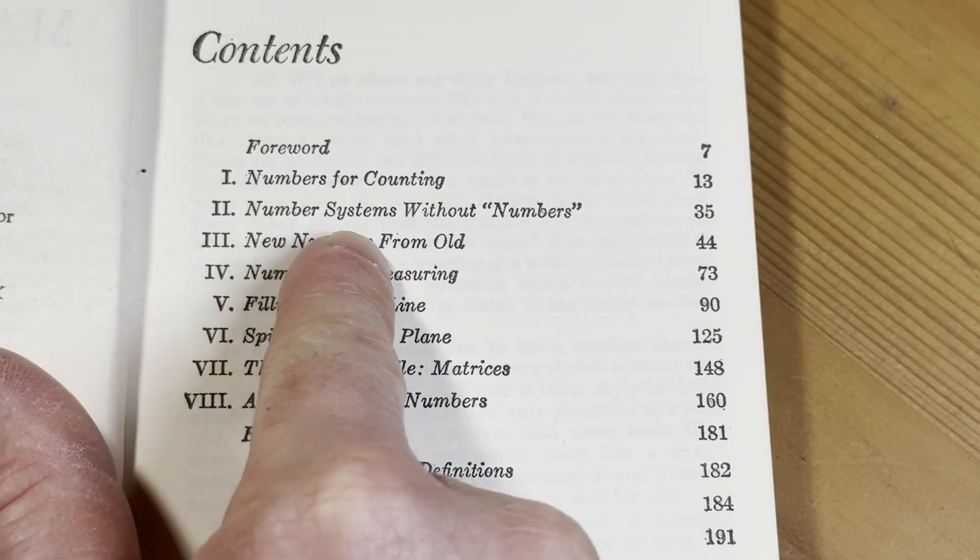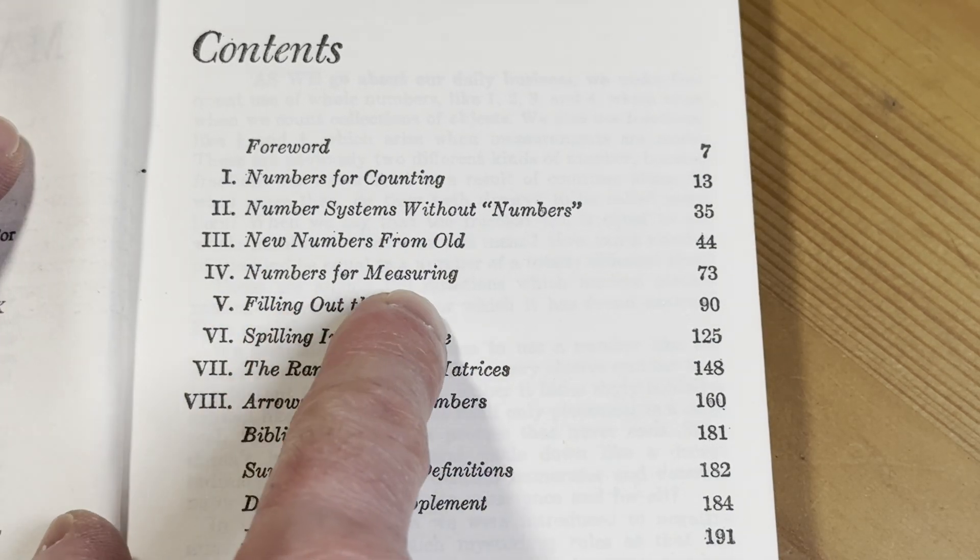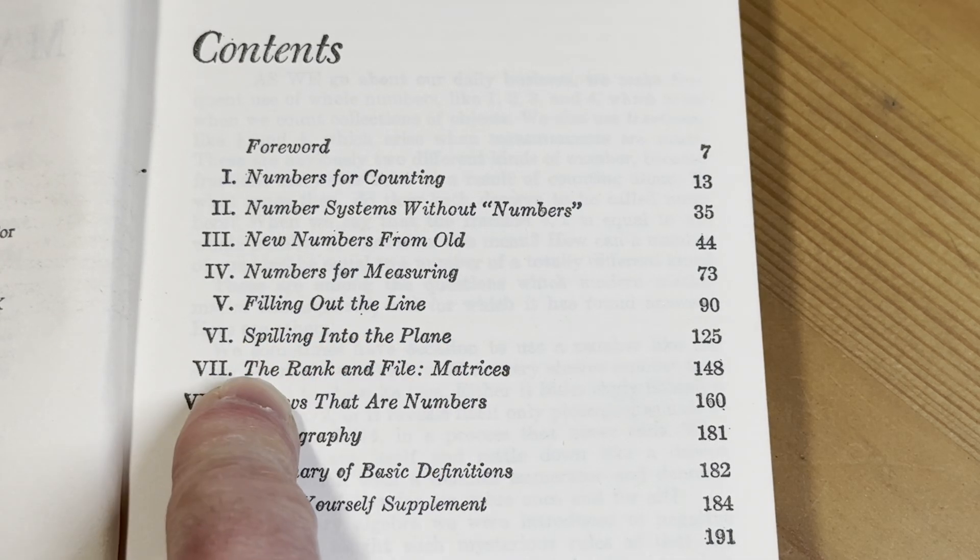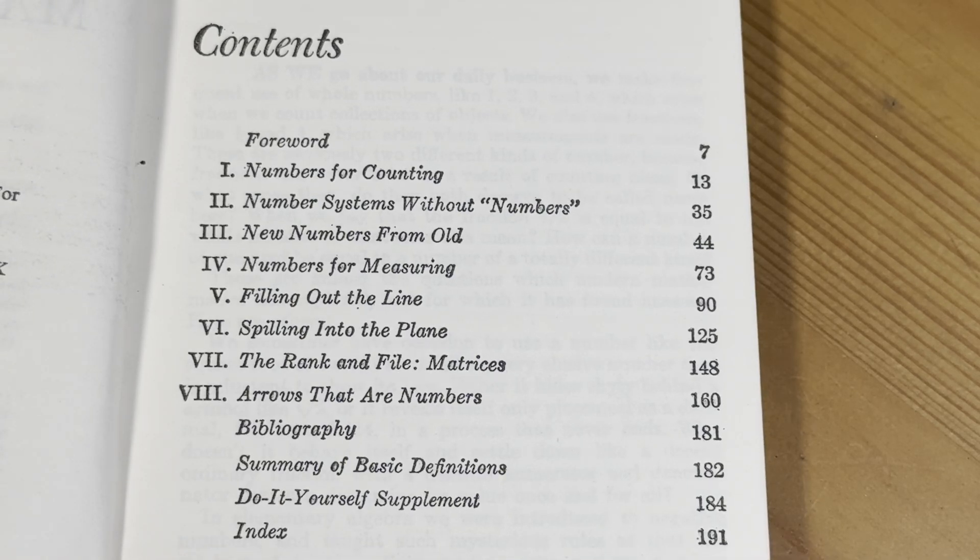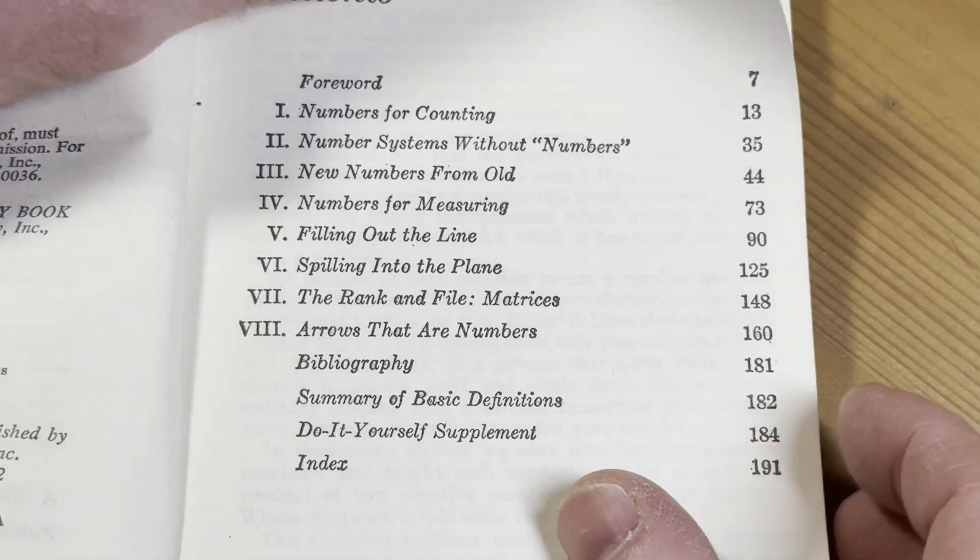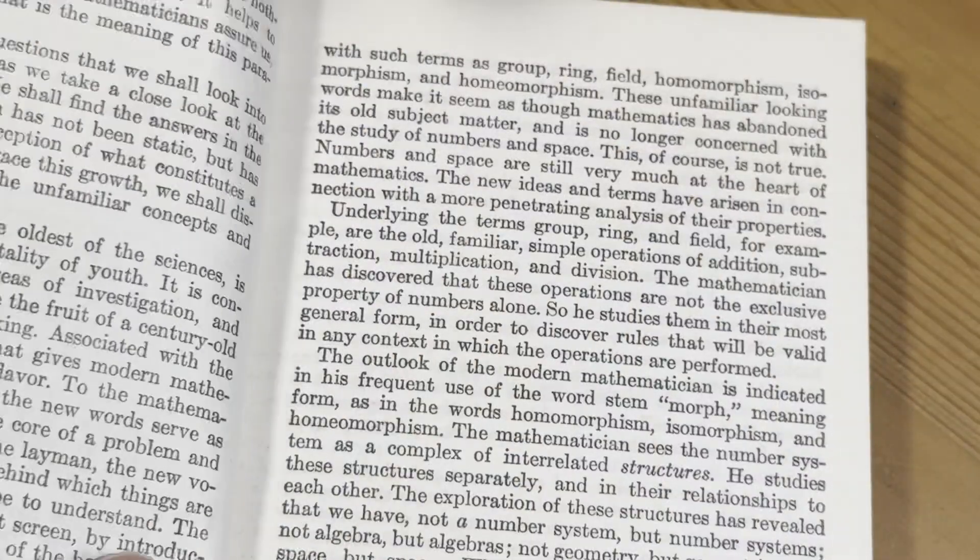And here are the contents. Numbers for counting, number systems without numbers, new numbers from old, numbers for measuring, filling out the line, spilling into the plane, the rank and file matrices, and then arrows that are numbers. And there's some other things here. There's a forward here. Let's go ahead and skip the forward.